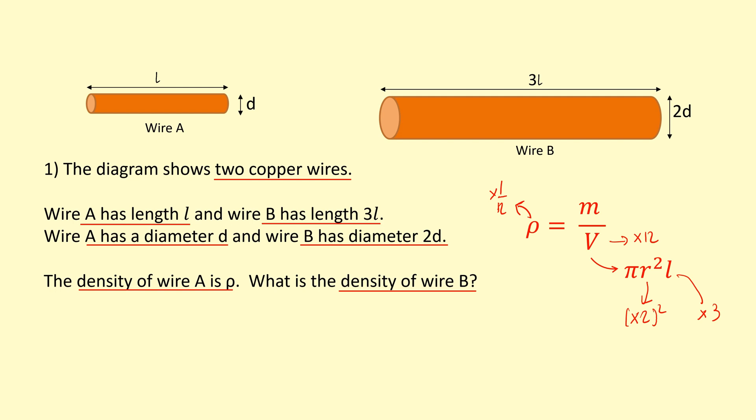This is incorrect because you're assuming the mass is constant. The truth is, the key to answering this question is in this sentence here: the two copper wires. That means they're the same material, so it means that they have the same density.